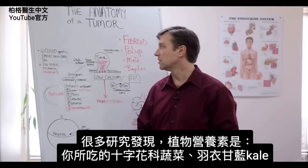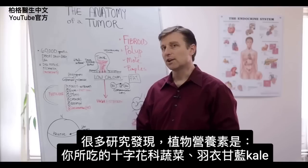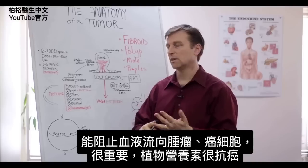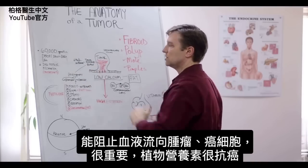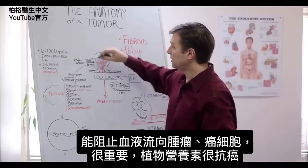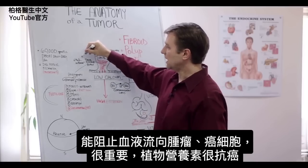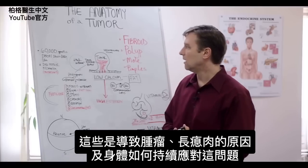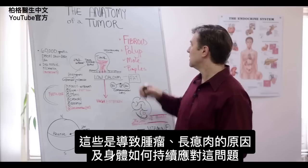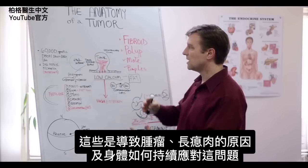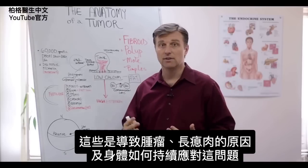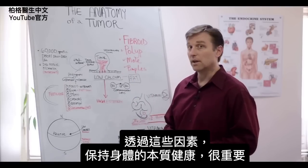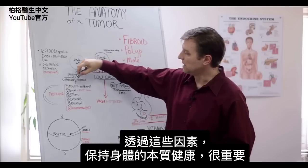There are a lot of studies being done on phytonutrients — that would be all those great cruciferous vegetables like kale that you're eating. Those are essential for blocking the blood flow to the tumor and to cancer. That's why phytonutrients are very anti-cancer. It's very, very important to keep the soil of your body, the terrain, very healthy through these factors.